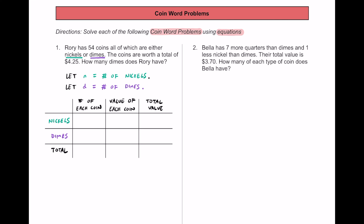Now that we have this all set up, we have to keep in mind that there are 54 coins in total. If we don't know how many dimes or nickels, we can write that the number of nickels plus the number of dimes — n plus d — equals 54. They have to add up to that.